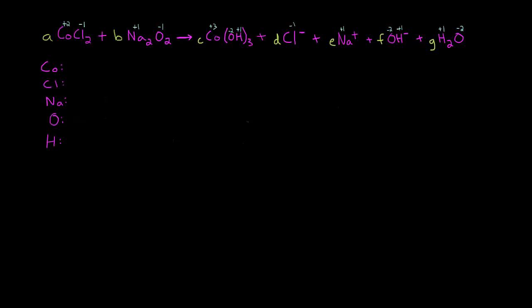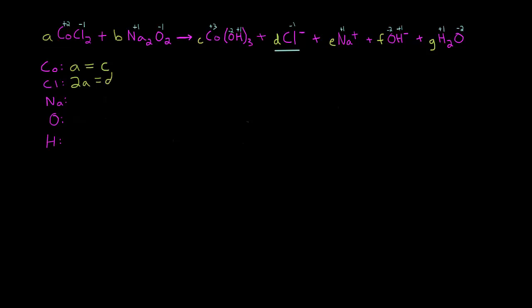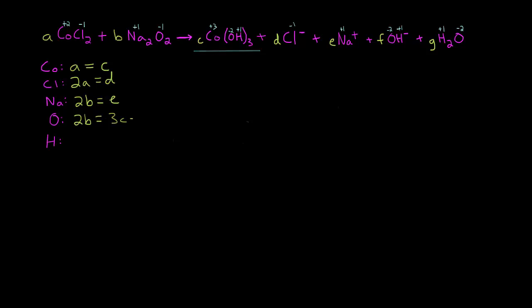We're going to start out the same way we always do and make our five normal equations. Starting with cobalt: we have one cobalt on the left side and one on the right side. Chlorine: 2A equals D. Sodium: 2B equals E. Oxygen: 2B equals 3C plus F plus G. Hydrogen: no hydrogens on the left, so zero equals 3C plus F plus 2G.